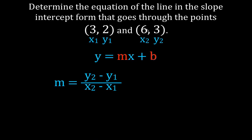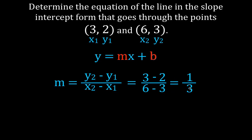We're simply going to plug the values in for x and y. Y2 is 3, so it's 3 minus y1 which is 2; x2 is 6 minus x1 which is 3. That means the slope is simply 1/3, because 3 minus 2 is 1 and 6 minus 3 is 3. The slope of our line is 1/3.